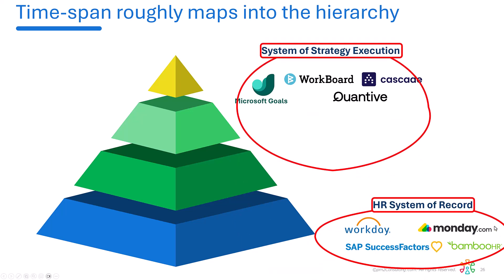The essence of it is these individual-level tools are the system of record — that's where you keep social insurance numbers, addresses, pay scales, annual performance reviews, all that kind of stuff. Whereas the system of strategy execution and employee engagement are these OKR systems, where you're looking at and tracking organizational performance. They line up more or less, but understand: this is individual level, this is organization level.